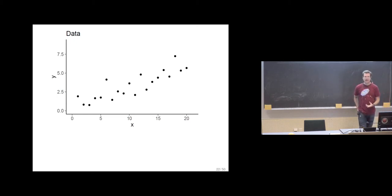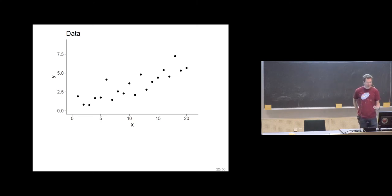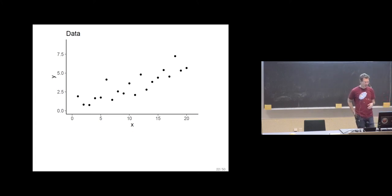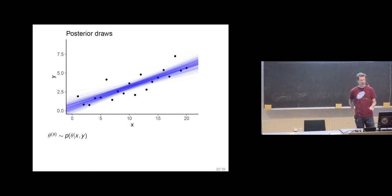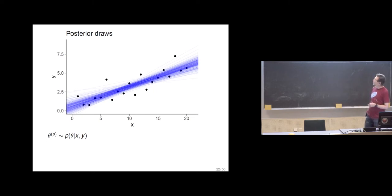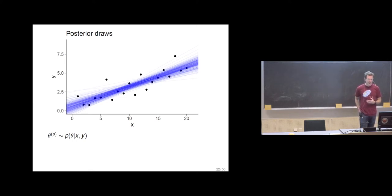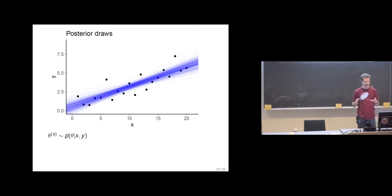This was the simplest data example from last time: just some values x and for each value x we've observed some y. We assume there's some relationship between these, but also that if we would observe y again given the same x, there can be variance. We can fit the model and, when running Markov Chain Monte Carlo, we get posterior draws. For each posterior draw we can plot a line which could explain the data, and we can see the uncertainty — where there are more lines, those are the more likely values.